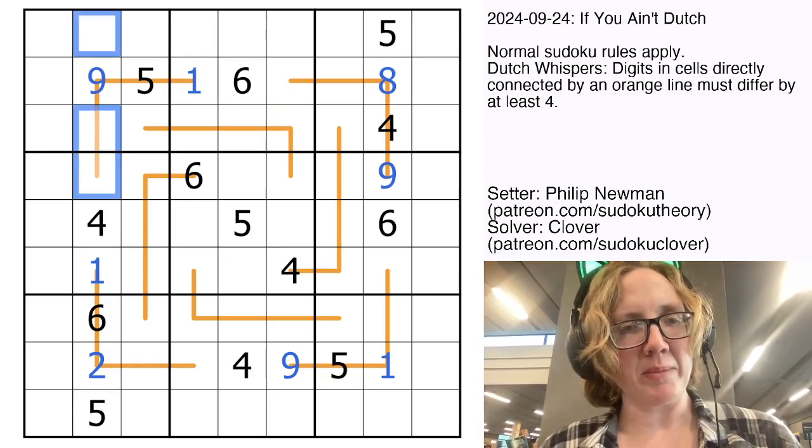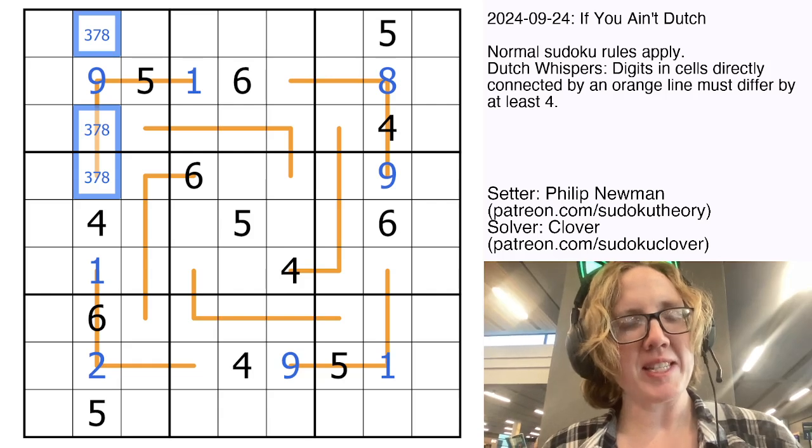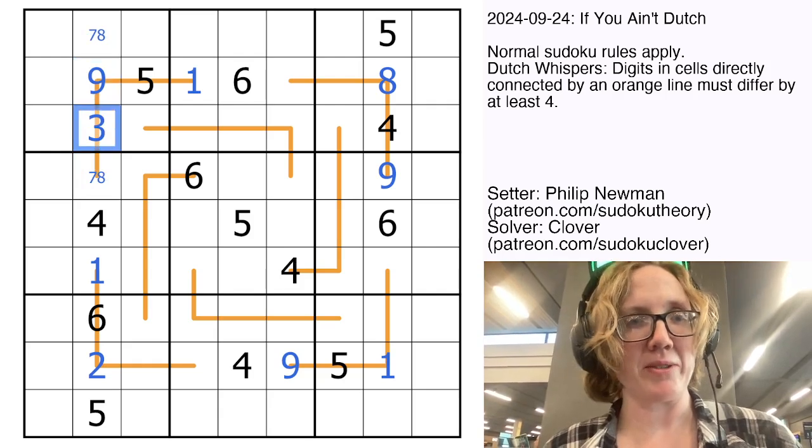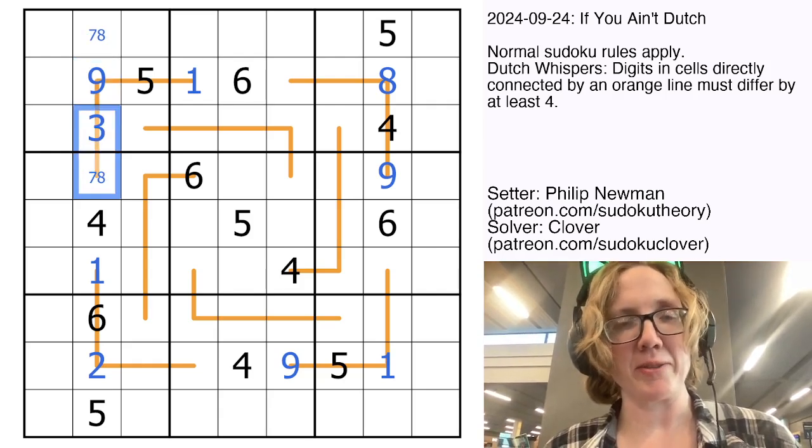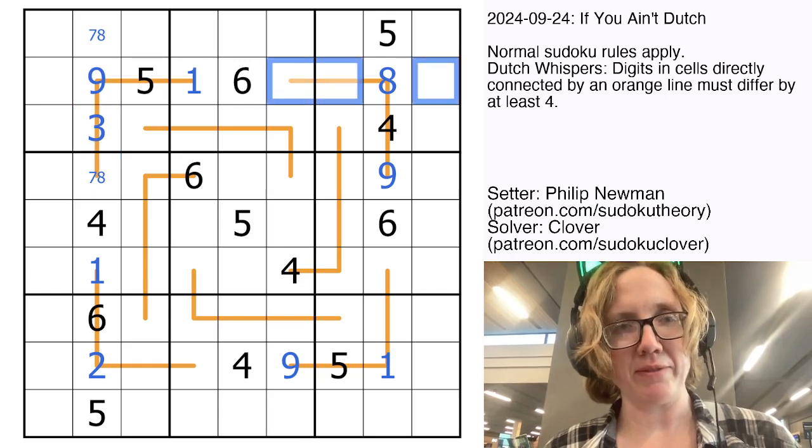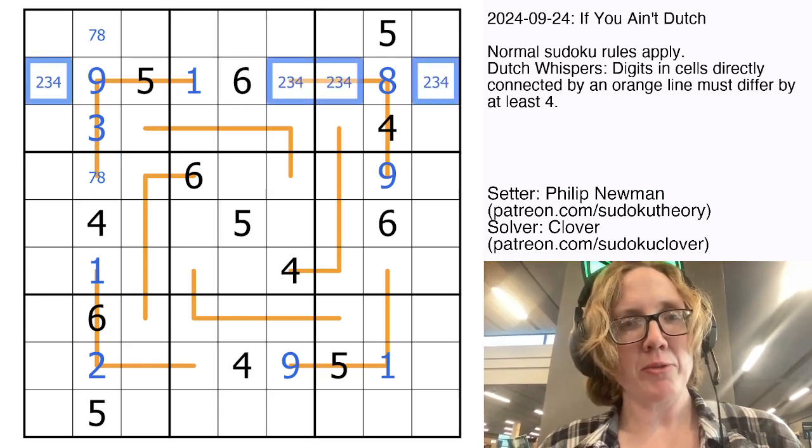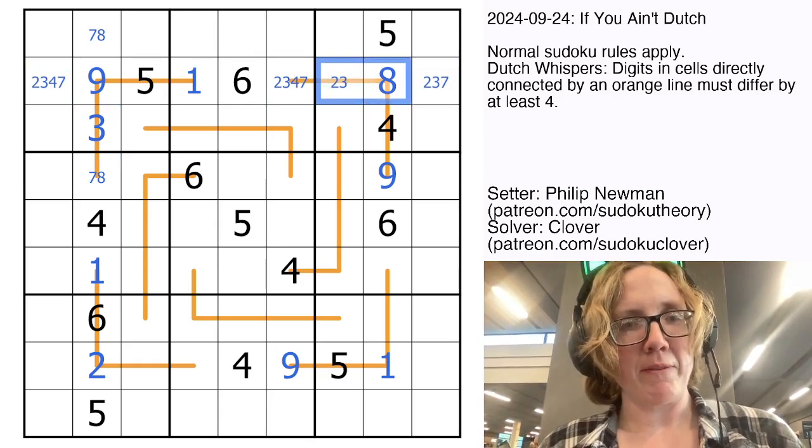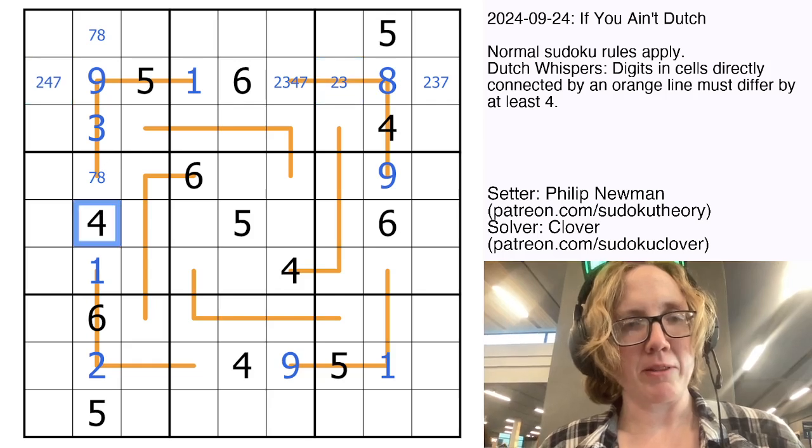So that gives us our opening. Let's take a look at these columns that we've nearly finished here. So we need 3, 7, and 8. And of those digits the only one that is far enough away from 9 to go there is going to be 3. But 3 can go next to either 7 or 8 so we're going to have to leave that for now. Here we need 2, 3, 4, and 7. We can't put a 7 there next to the 8. We also can't put 4s in this region and we can't put a 3 here.